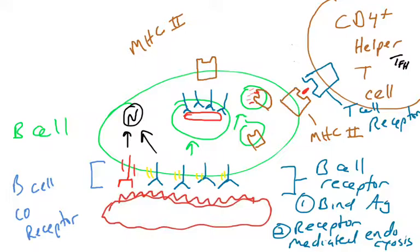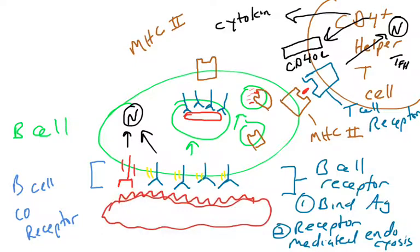If the B cell has shown this to the T cell and the T cell says, yep, whatever you bound, that thing doesn't belong in our body. The T cell will now begin giving permission to the B cell to unleash a highly specific attack. So this is going to involve signals sending into the nucleus of the T cell, telling the T cell to put a protein on its surface called CD40 ligand or CD40L.